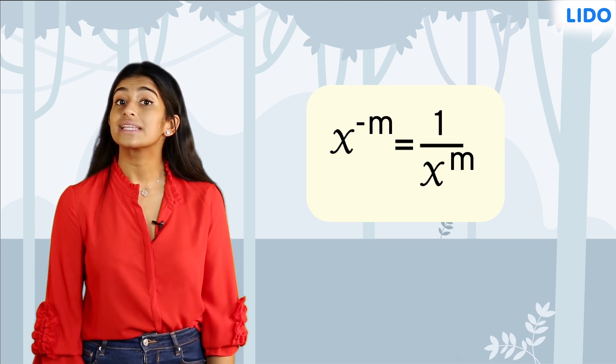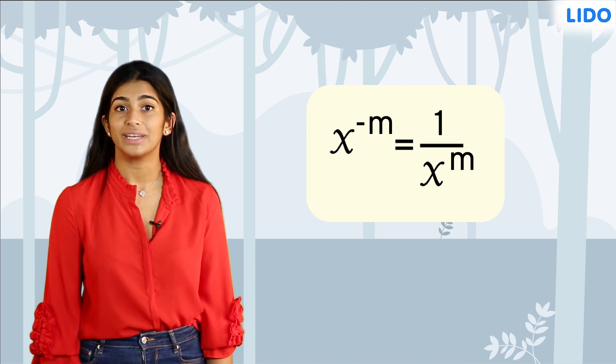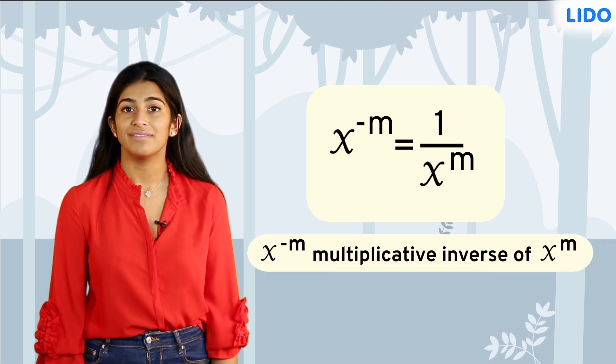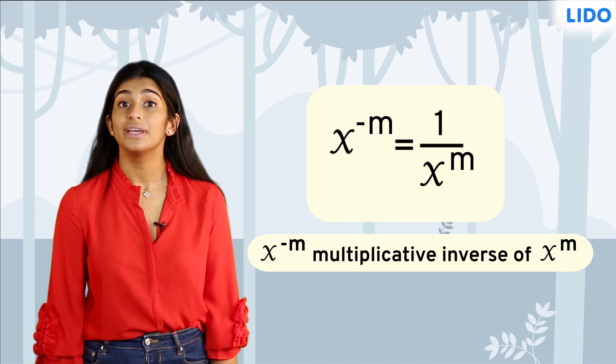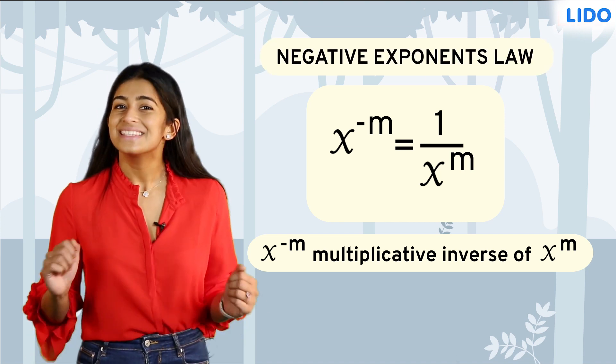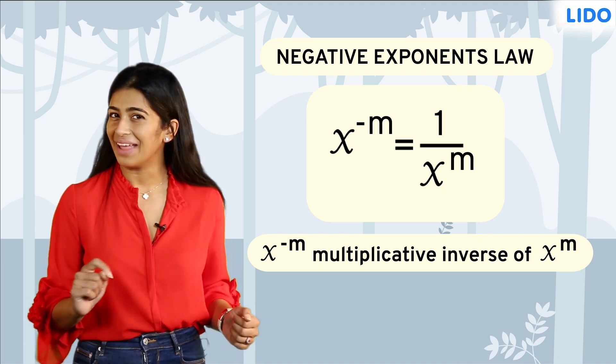Therefore, we can say that an integer raised to a negative exponent is the multiplicative inverse of the corresponding positive exponent. This is called the negative exponent's law. See how patterns can be useful in math too?